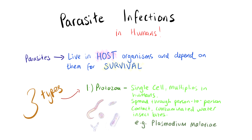There are three types of human parasites. The first one is called a protozoa — these are single cell organisms and they can multiply in humans. They can spread through contaminated food and water, person-to-person contact, and insect bites. An example of a protozoa is Plasmodium malariae, which causes the malaria infection.